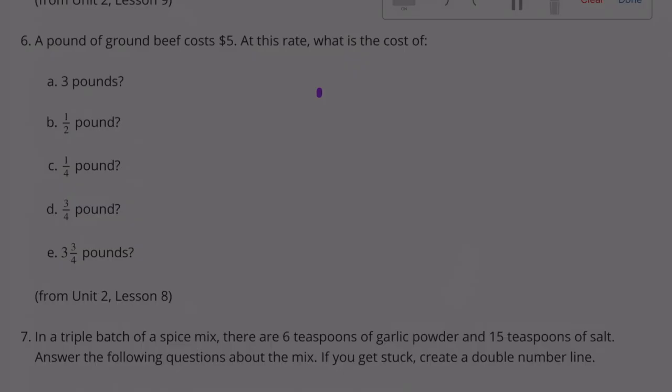Number 6. A pound of ground beef costs $5. At this rate, what is the cost of 3 pounds? If 1 pound is $5, then 3 pounds would be 3 times 5, so that would be $15.